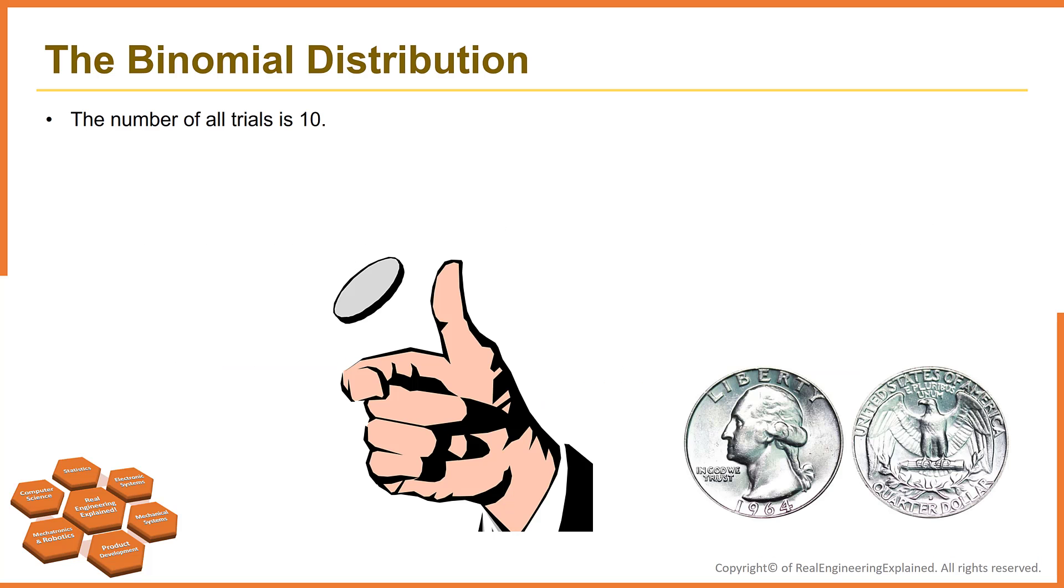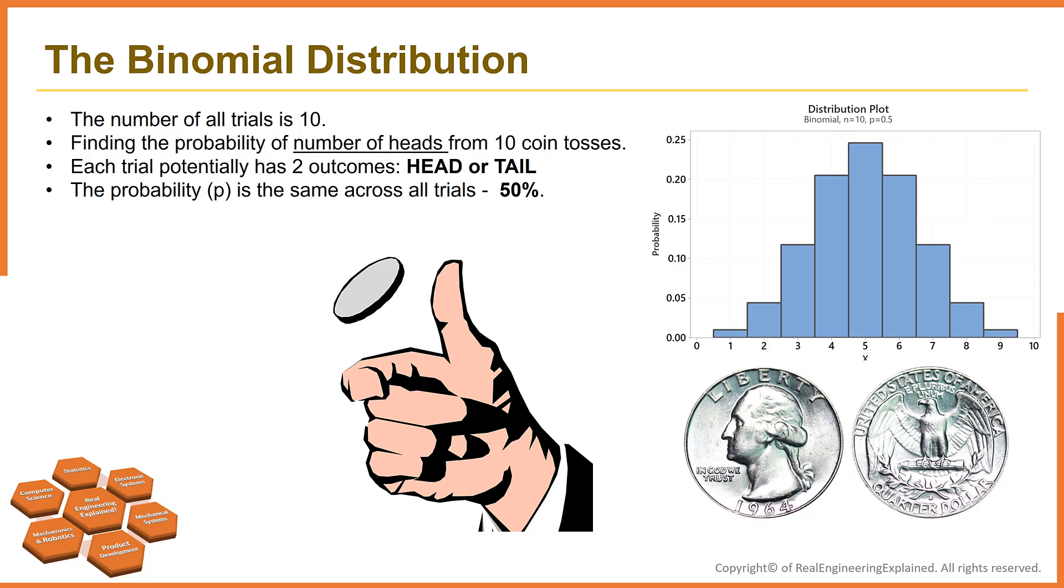One of the classic examples of binomial distribution is finding the probability of number of heads from 10 coin tosses. As you can see, there is a low chance to get 10 heads or 0 heads in a row, but it is more probable to get 5 heads out of 10 coin tosses.